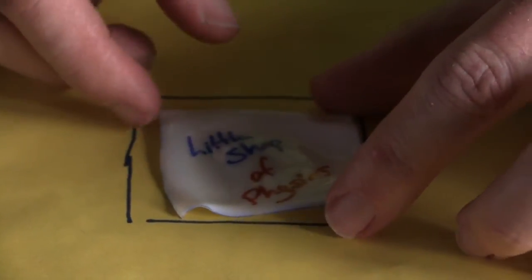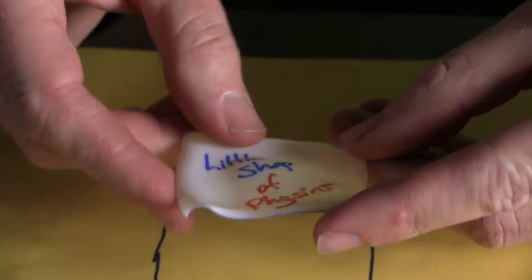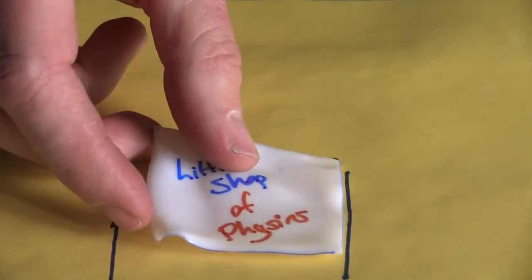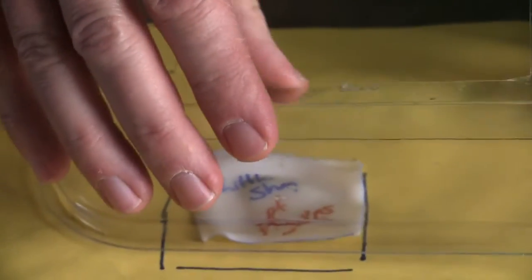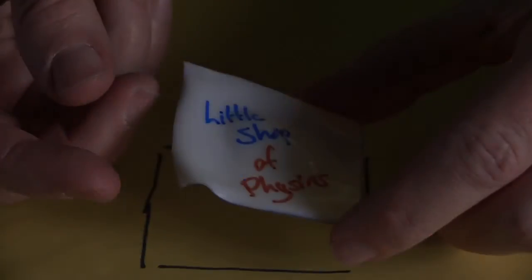Another change you can see is that this is much more rigid than when we started. That's because it got a little bit thicker. The original plastic is pretty bendy. This is not bendy at all.